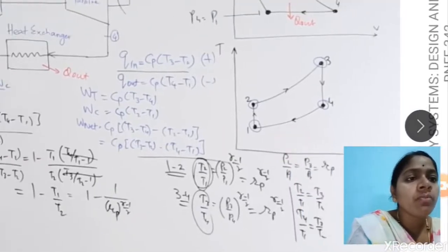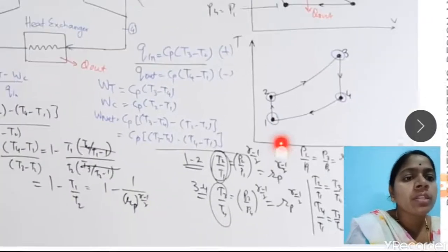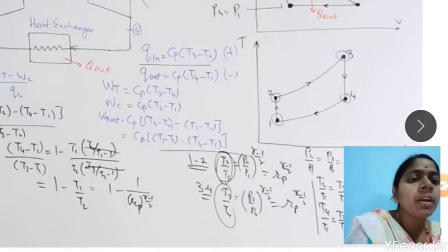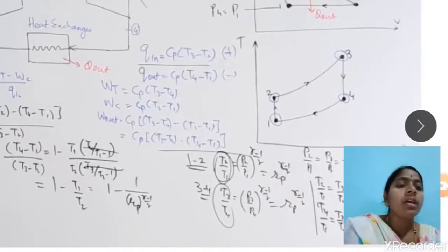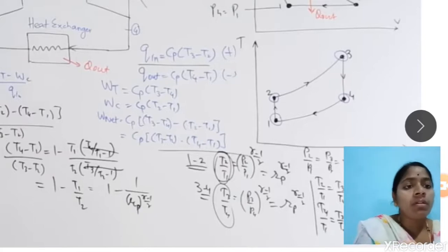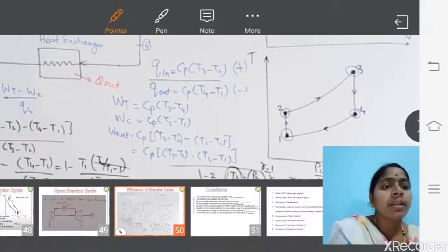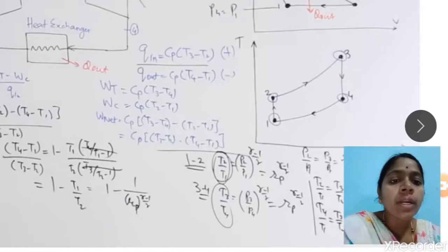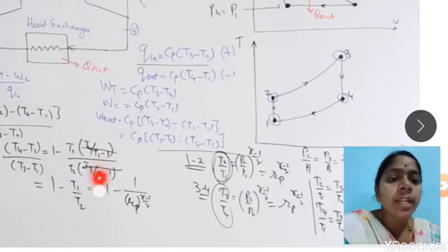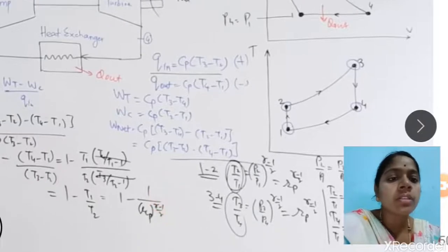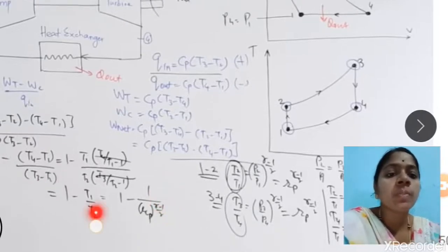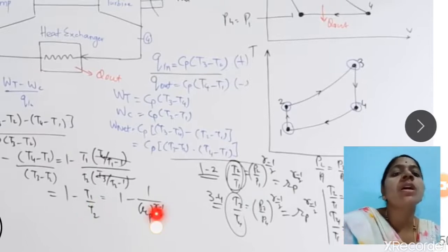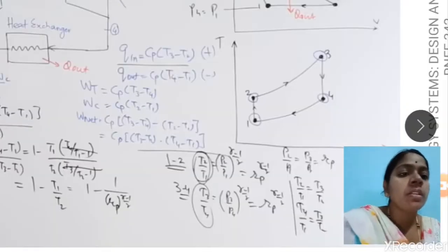Using the isentropic relation for process one to two, T2/T1 = (P2/P1)^((α−1)/α), where α is the adiabatic constant and rp = P2/P1 is the pressure ratio. Therefore T1/T2 = 1/rp^((α−1)/α), and the efficiency of the Brayton cycle becomes: η = 1 − 1/rp^((α−1)/α). This gives the efficiency both in terms of temperature ratio and in terms of pressure ratio.